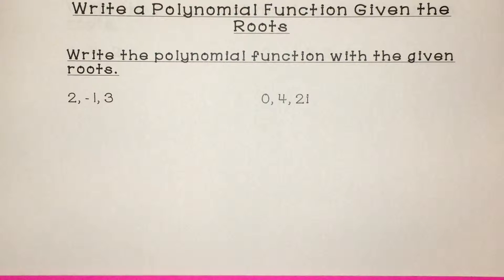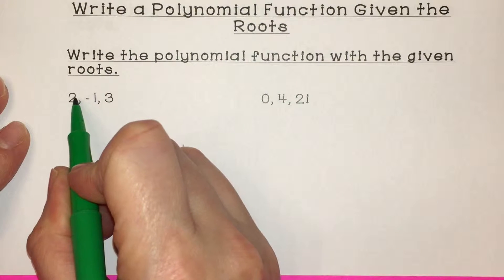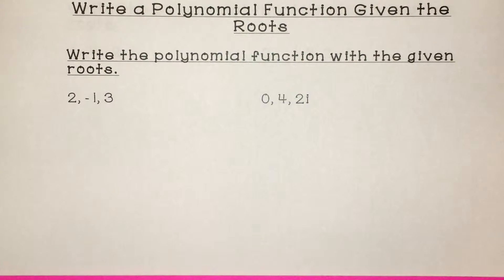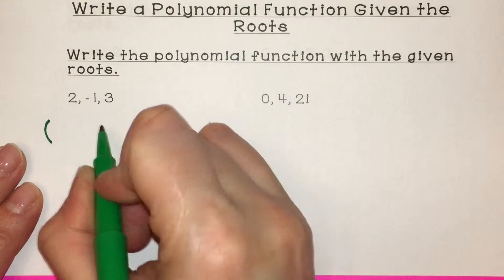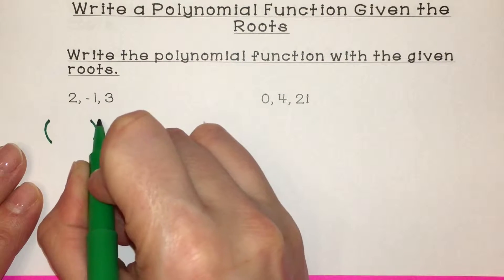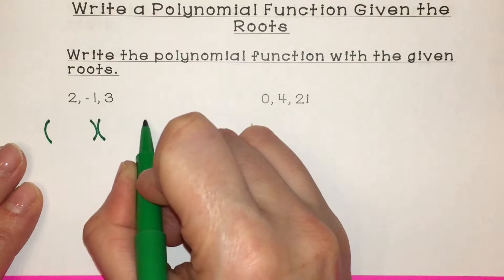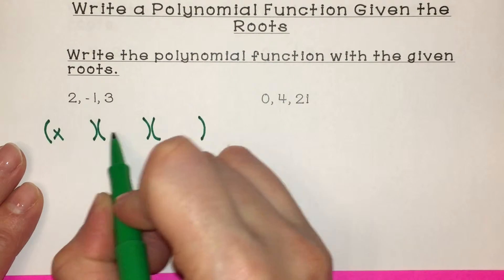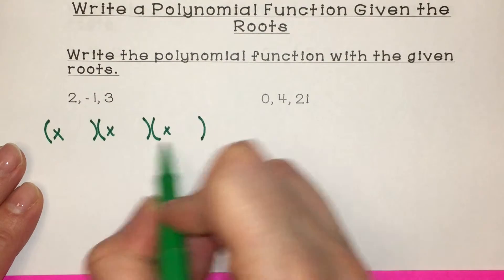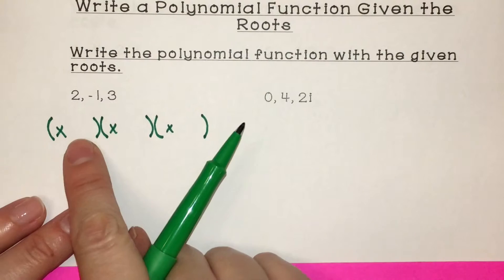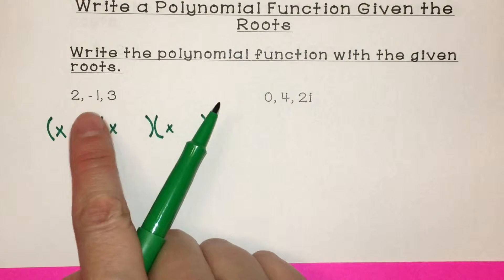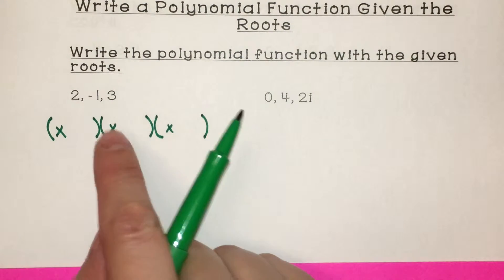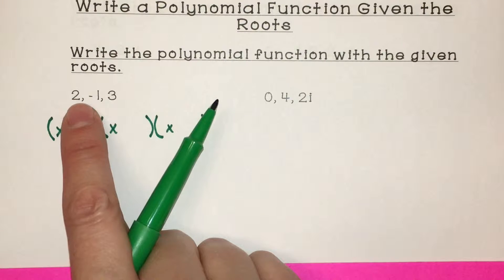We need to work backwards and figure out what the polynomial function originally was. If x is equal to 2, we know that originally we had some factors — in this case three factors multiplied together. It's always x plus or minus the number, and you set it equal to 0. In this case the first one simplified to 2.